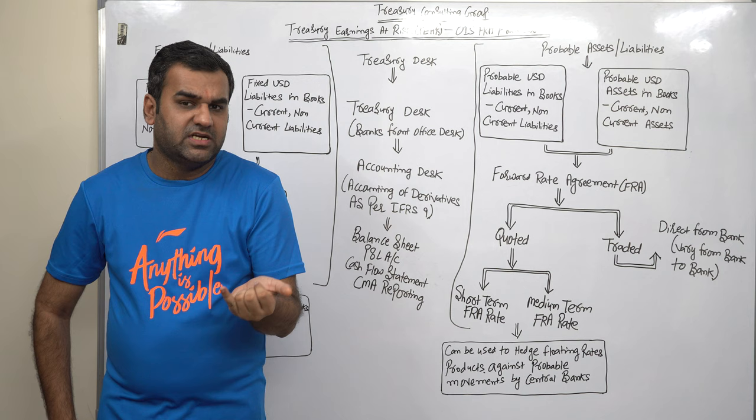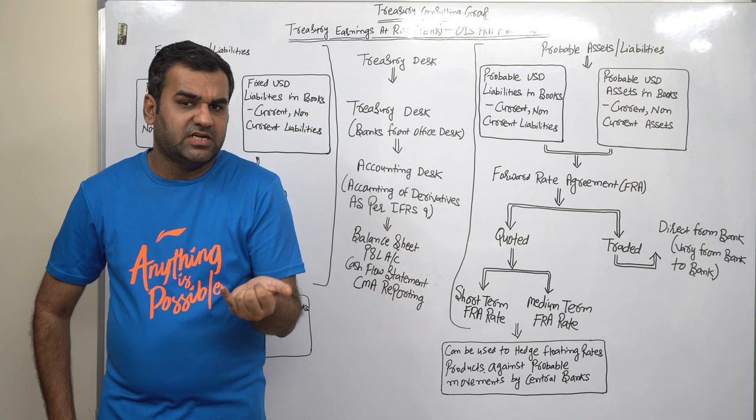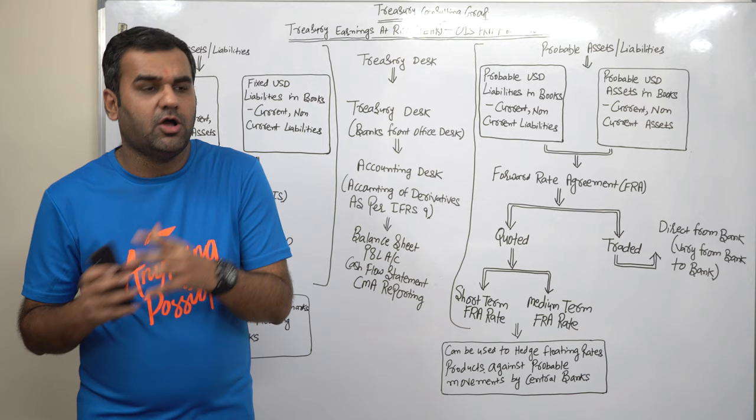So Larsen and Toubro, Tata Consultancy Services, Exxon Mobil, to an extent Aramco, now Amazon, you have Reliance Industries Limited. They need hats off. Because hats off to them, the way they manage treasury. They set up an example.